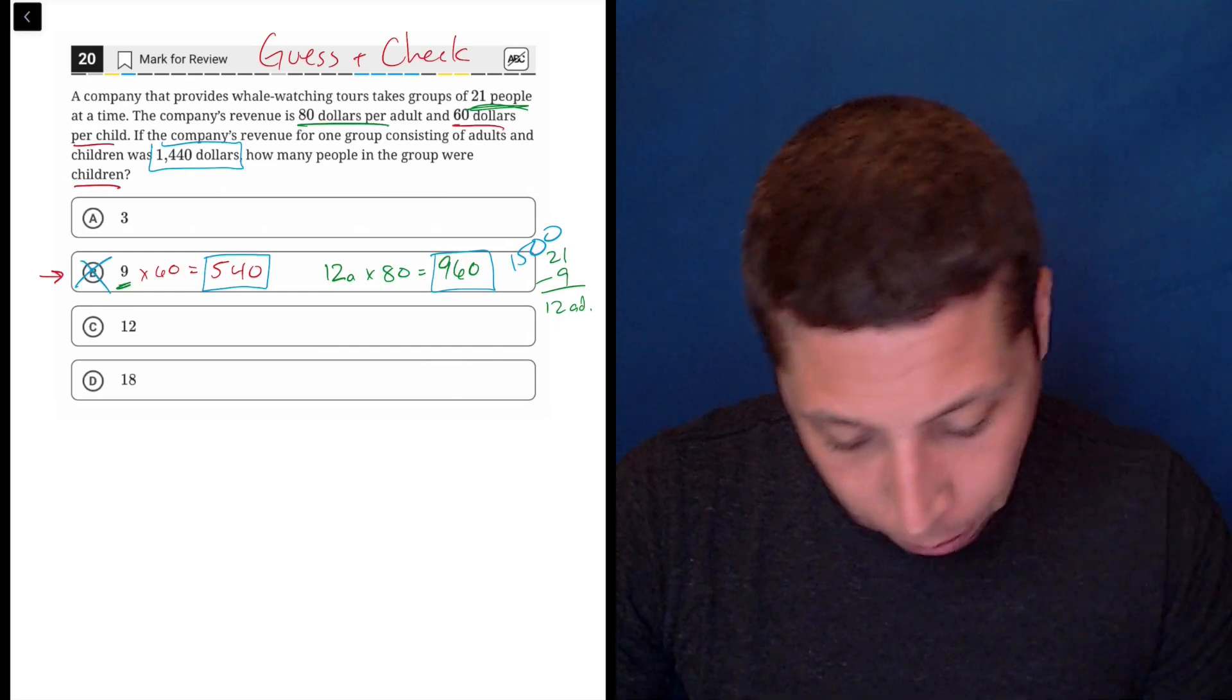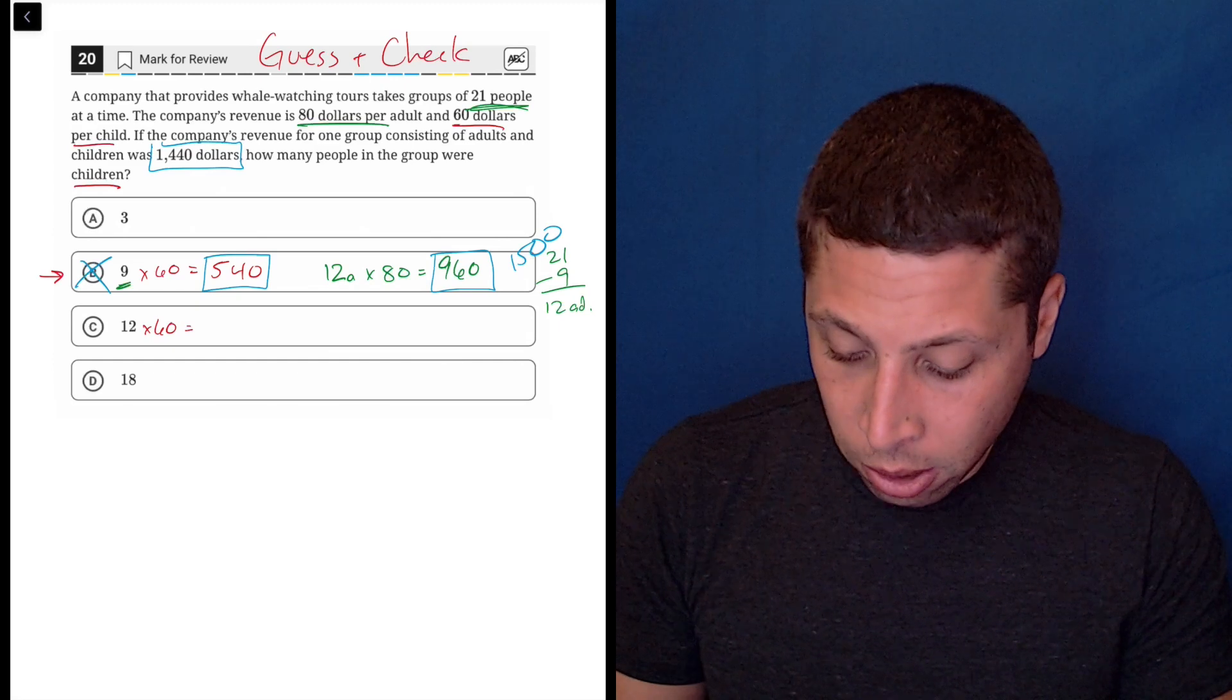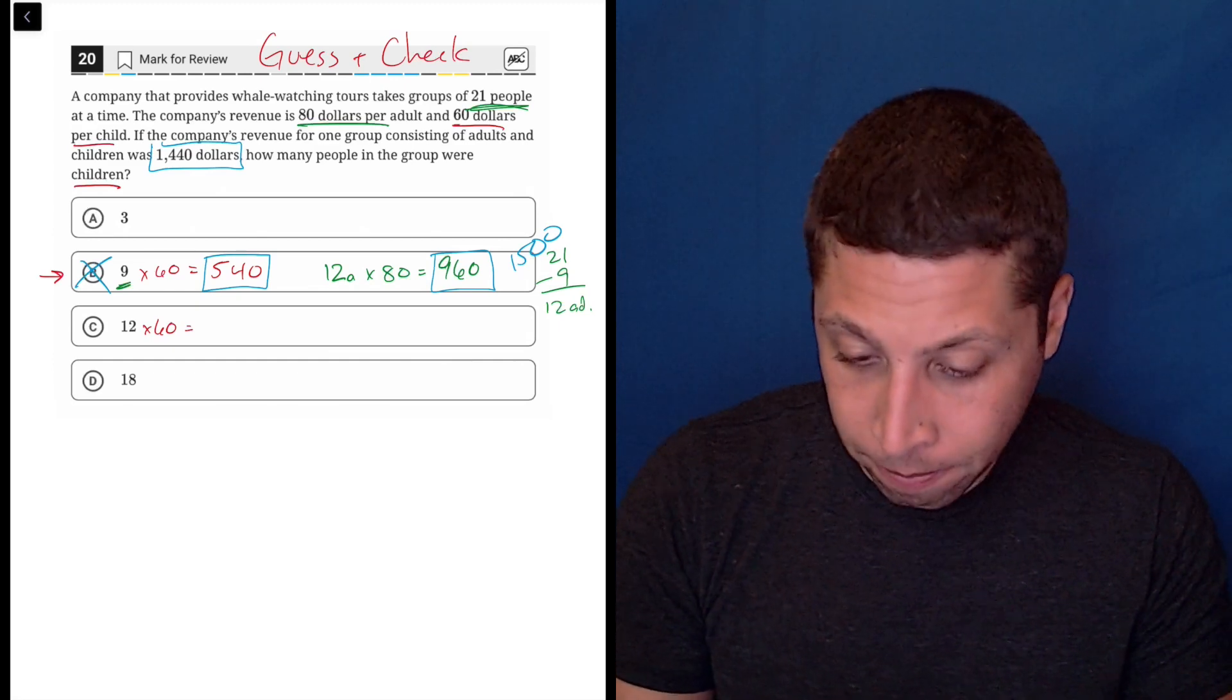So let's just do the same exact work though. So 12, now again, times 60, that's the rate for children. So 12 times 60 is 720.